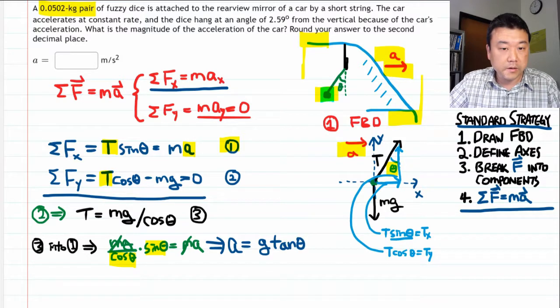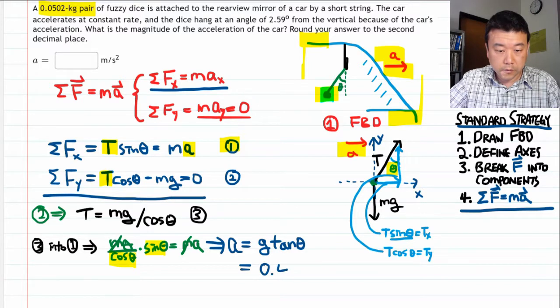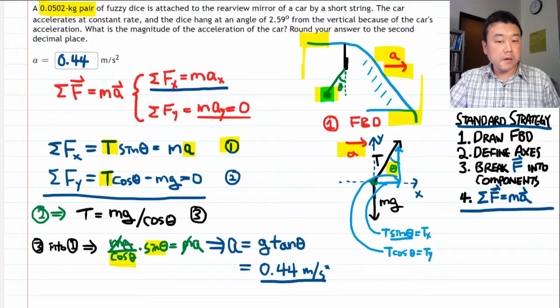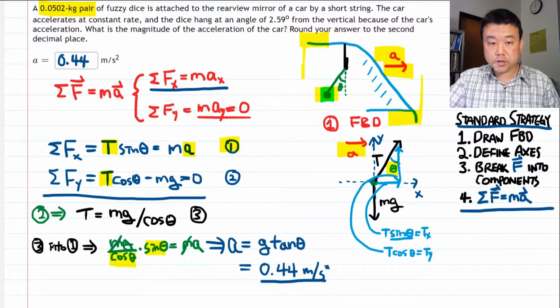we get acceleration is equal to g tangent theta. Or plug in the numbers. Let me use g is equal to 9.8. I get 0.44 meters per second squared. All right. That's it.